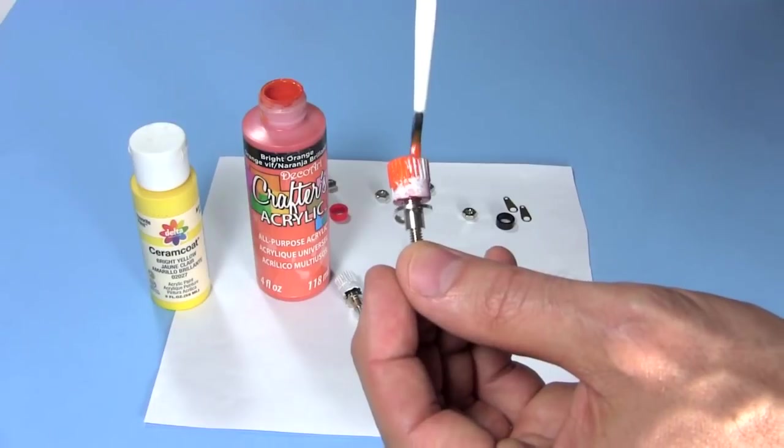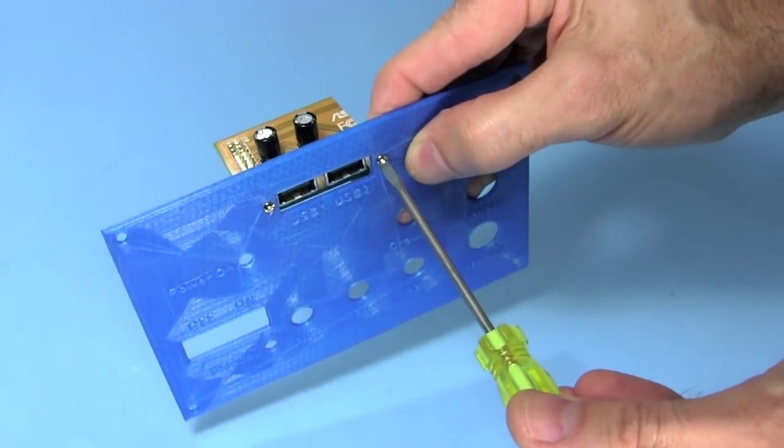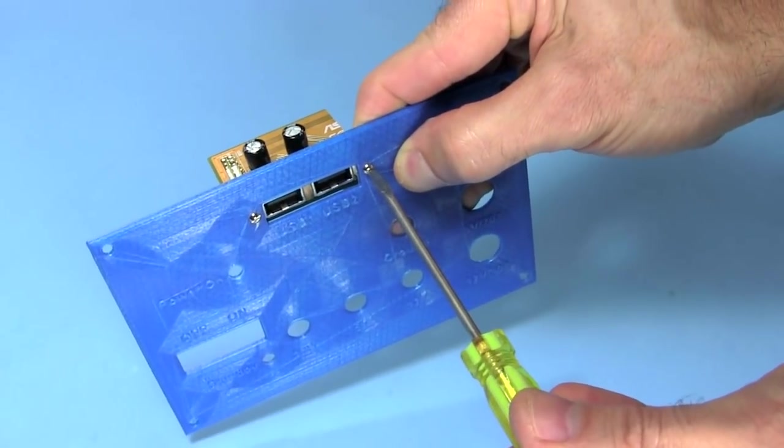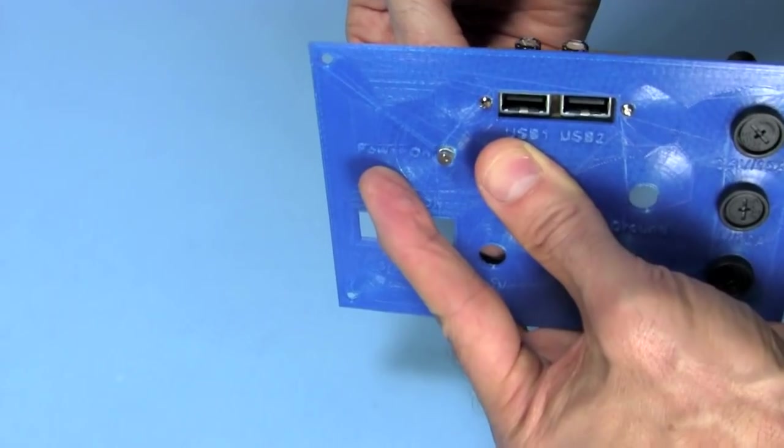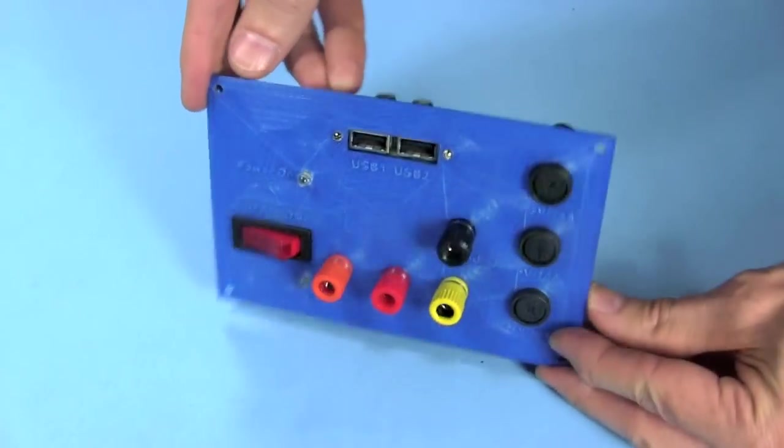I paint two of the binding posts as I planned to, first with the primer and then with the acrylic paint since that's what I had. Then, while it's still easy to do so, I mount the USB ports, the fuses, the LEDs, the switch, and the binding posts. Everything fits nicely.